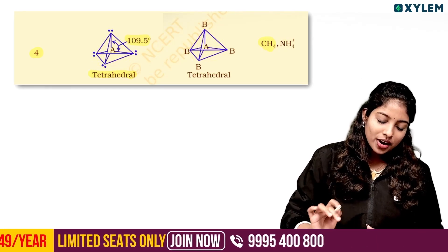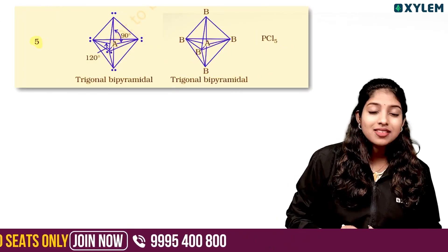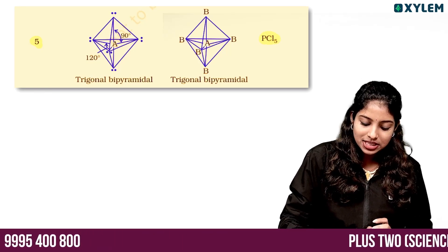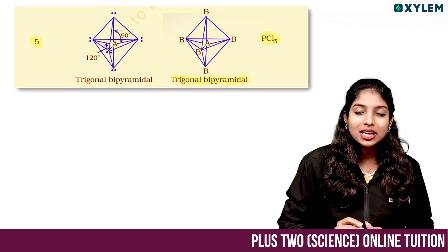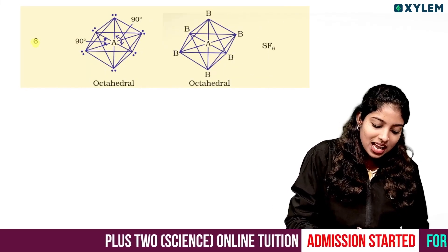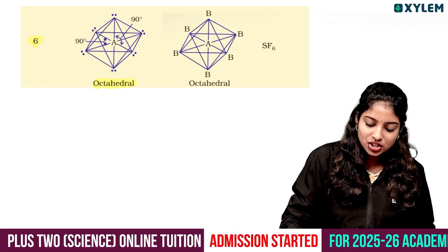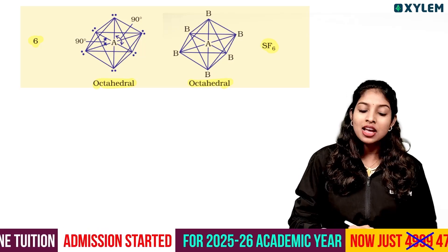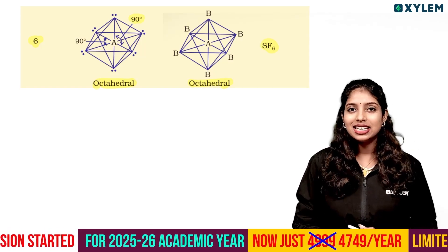With 5 bond pairs, the geometry is trigonal bipyramidal — example: PCl5. With 6 bond pairs, the geometry is octahedral — example: SF6, with a bond angle of 90 degrees.